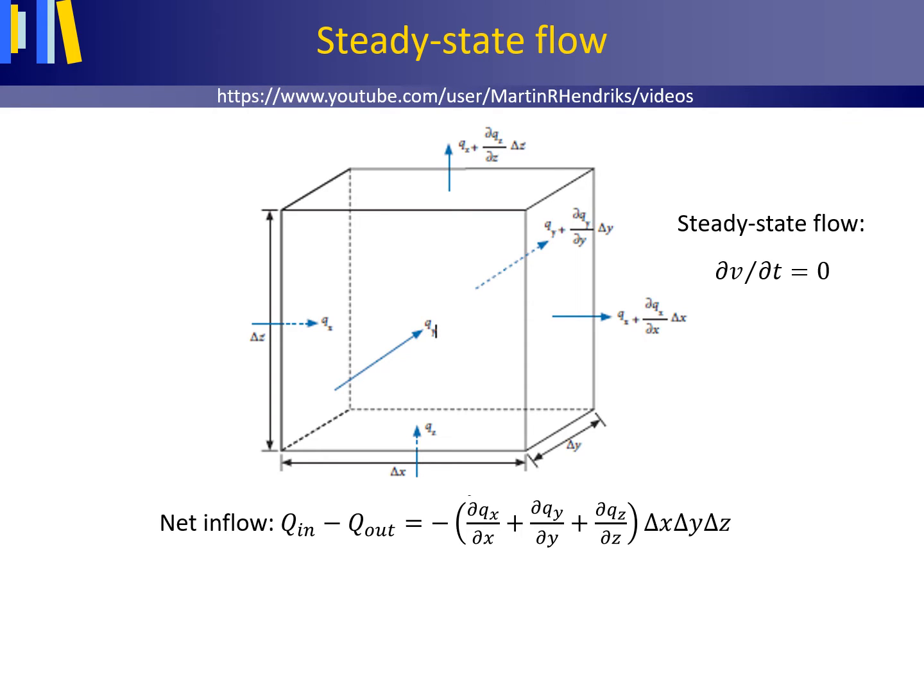Stationary or steady state flow occurs when at any point in a flow field the magnitude and direction of the flow velocity are constant with time. dv/dt equals 0.